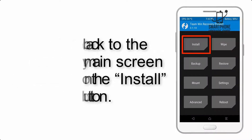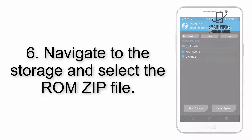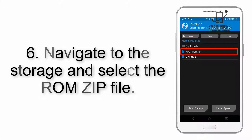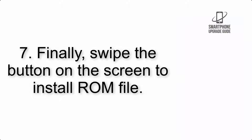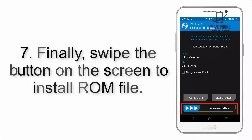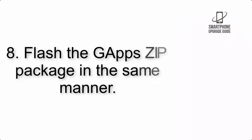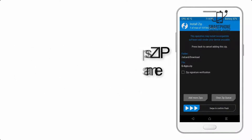Step 5: Go back to the recovery main screen and tap on the Install button. Step 6: Navigate to the storage and select the ROM zip file. Step 7: Finally, swipe the button on the screen to install the ROM file.